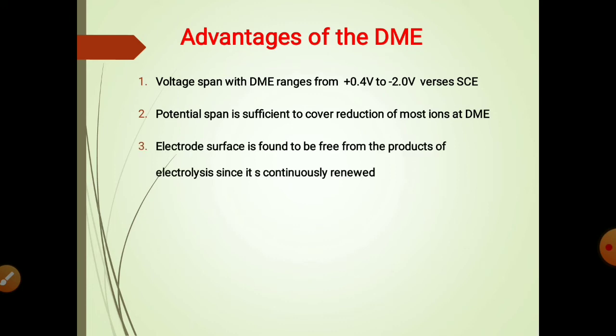The next advantage is, as the electrode surface is continuously renewed, it is found to be free from the products of electrolysis. A continuously renewed mercury surface eliminates poisoning of the surface due to accumulation of impurities. Additionally, as the electrode area is reproducible, the currents obtained are reproducible for the same solution.